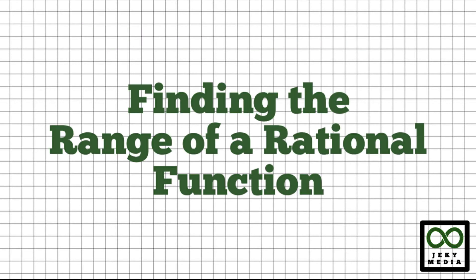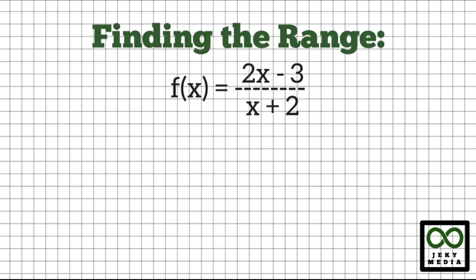Let's find the range using the rational function from the first example: f(x) equals (2x minus 3) over (x plus 2). Step 1: Change f(x) into y. y is equal to (2x minus 3) over (x plus 2).